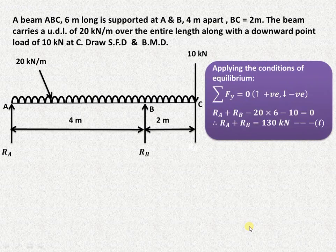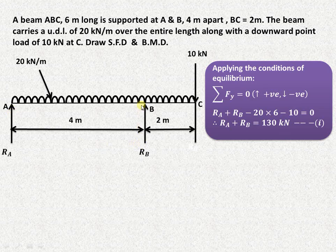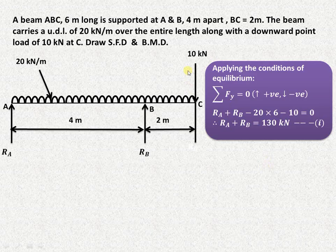We apply the conditions of equilibrium, that is summation of Fy equal to 0. Upward forces are considered as positive and downward forces are considered as negative. RA and RB are both acting in the upward direction. The UDL is 20 kilonewton per meter over 6 meters, so 20 into 6 is the total UDL load. The point load is 10 kilonewtons. Therefore RA plus RB equals 130 kilonewtons.